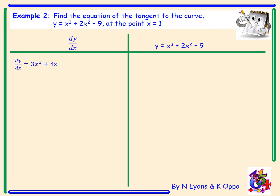Starting by differentiating: dy by dx equals 3x squared plus 4x. When x equals 1, our derivative is 3 times 1 squared plus 4 times 1. 3 plus 4 gives an answer of 7. So when x equals 1, our gradient at that point is 7.